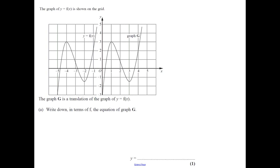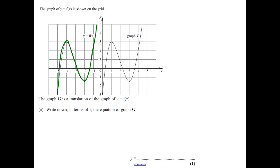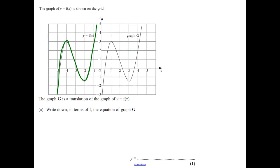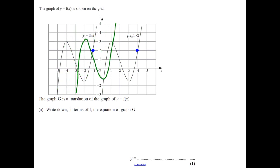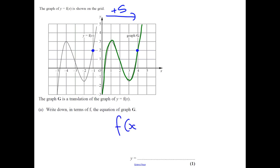The graph of y equals f(x) is shown. The graph has a translation to give a new graph. We need to pick a point that's easy to use — probably a point on an intersection — and see how much it's moved to get to a new point. Counting: it moves across 5 to get there. But remember it's to x, so in the equation we actually do the opposite and minus 5. So it's f(x − 5).